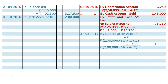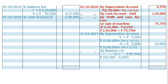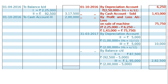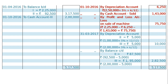Then we have to find out balance carried down on 31st March 2017. For the second machine, it is Rs. 92,500 minus Rs. 5,000, that is Rs. 87,500 — the balance of the second machine. For the third machine, Rs. 2,00,000 minus Rs. 5,000, that is Rs. 1,95,000. Total balance carried down will be Rs. 2,82,500. Both sides total Rs. 5,17,500.